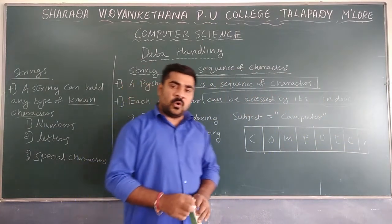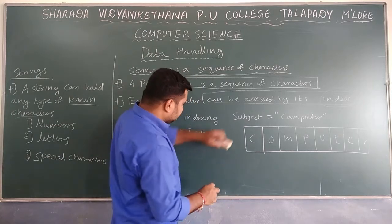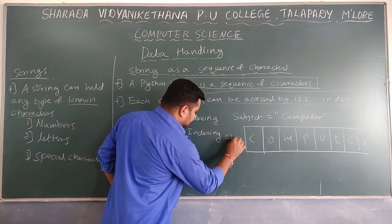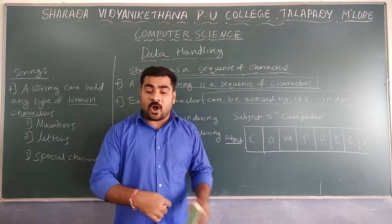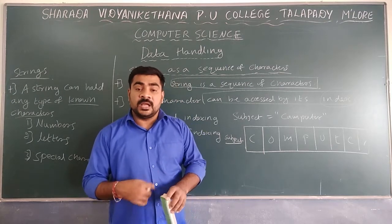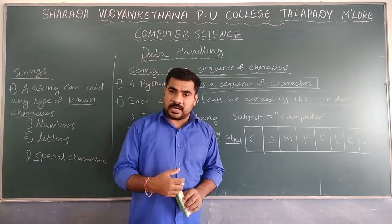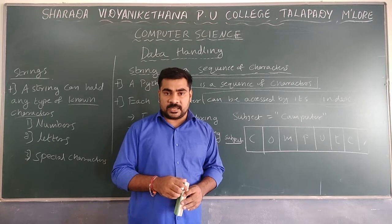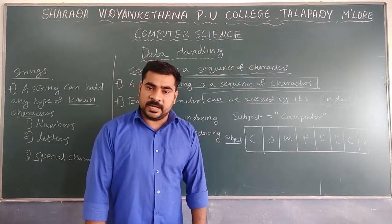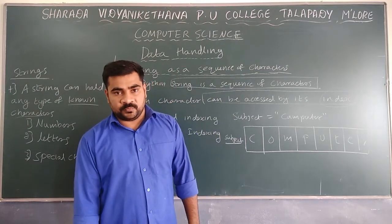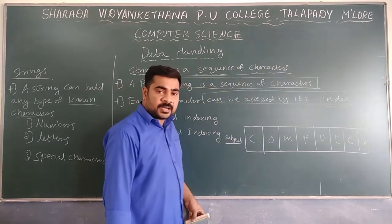These are the memory spaces created to hold each character. So it will create a memory space for the variable 'subject' = 'computer'. Whenever you want to access data stored like this, we mainly use the index. Index means the location of each character — the location of each character is known as the index.